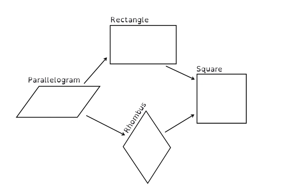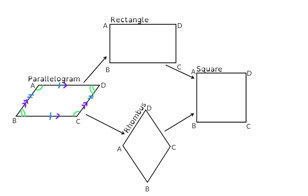Next we move to our parallelograms. The basic parallelogram has two pairs of opposite sides that are equal in length and these same pairs are also parallel. In Grade 8 you also learned that the two pairs of opposite angles are equal. A rectangle is also a type of parallelogram but with an extra property: all four angles are 90 degrees. A rhombus is also a parallelogram, with the extra property that adjacent sides are equal in length, making all four sides equal. Finally, a square is a combination of all the previous — a parallelogram with 90-degree angles and all sides equal.